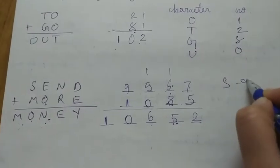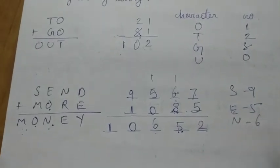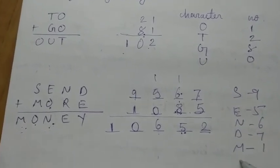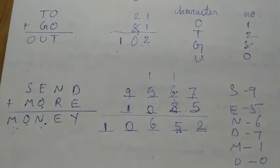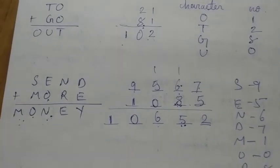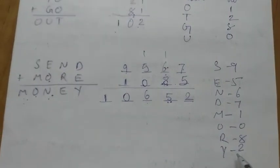So here we can say S has the value 9, E has 5, N has 6, D has 7, M is 1, O is 0, R is 8, and Y is 2. Thank you.